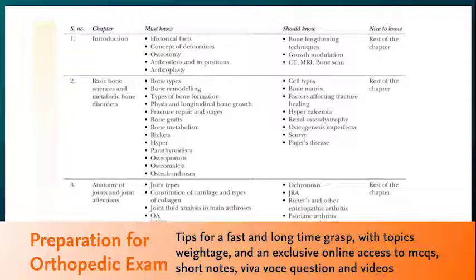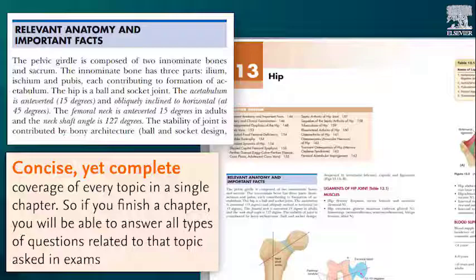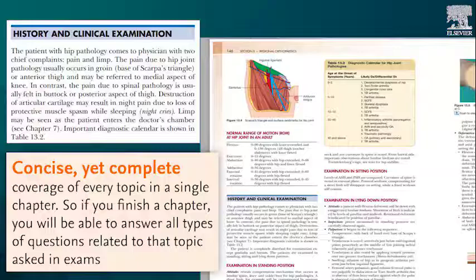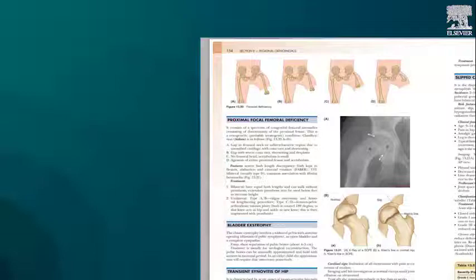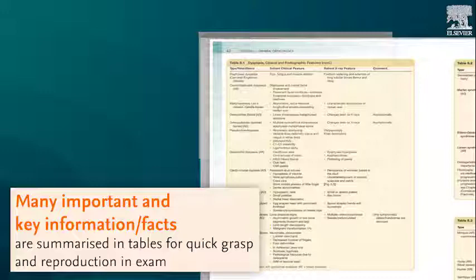This book also provides information on topics weightage and excellent digital resources to help you prepare for your orthopedic exam. Each topic is covered completely in a single chapter — for example, the chapter on hip contains anatomy, clinical examination, various anomalies and disorders, all within one space. Topics are written in a lucid manner and presented in bulleted format for easy understanding.